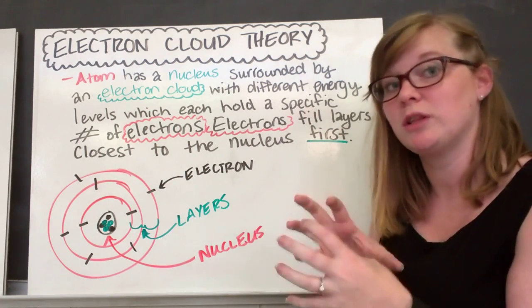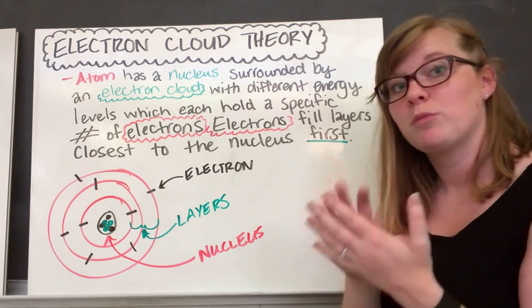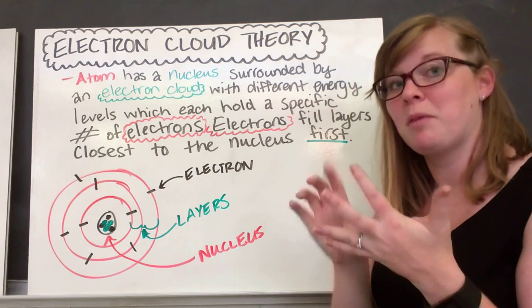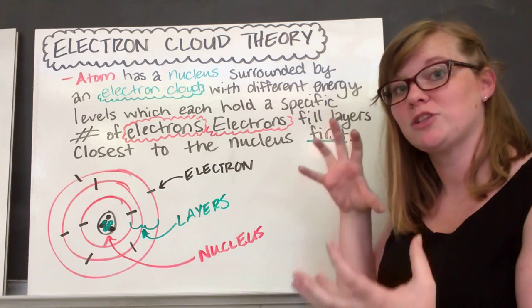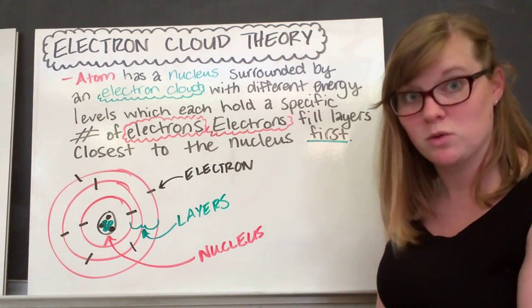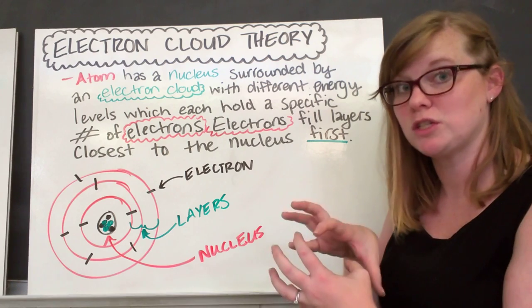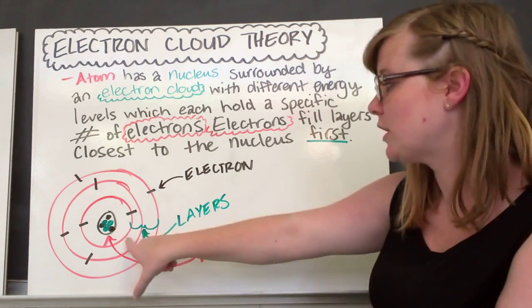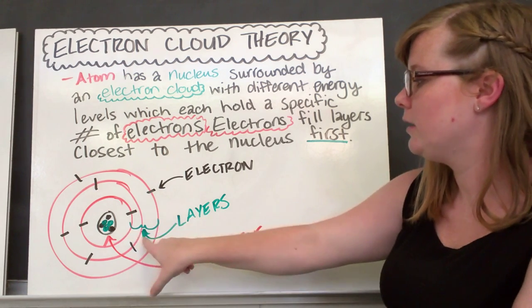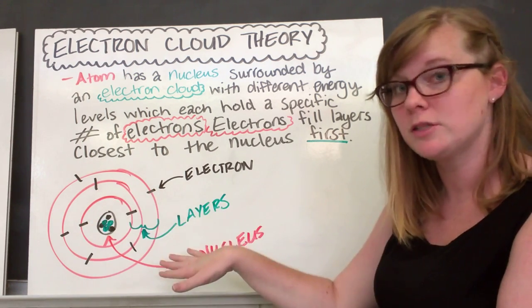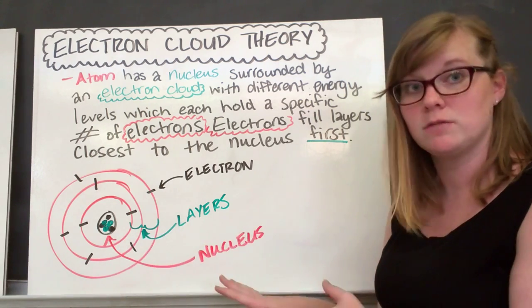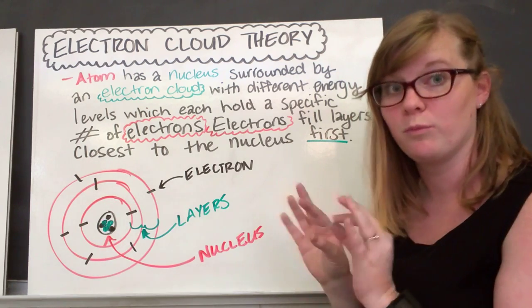Electrons fill layers closest to the nucleus first — electrons want to be as close to the nucleus as they can. Electrons are negatively charged and protons are positive, so the positive charge from the proton and the negative charge from the electron attract each other. So electrons will be in our inner shells first. Our shells, layers, or levels — we'll use all three. This atom has three layers, and they always fill that inside one first.